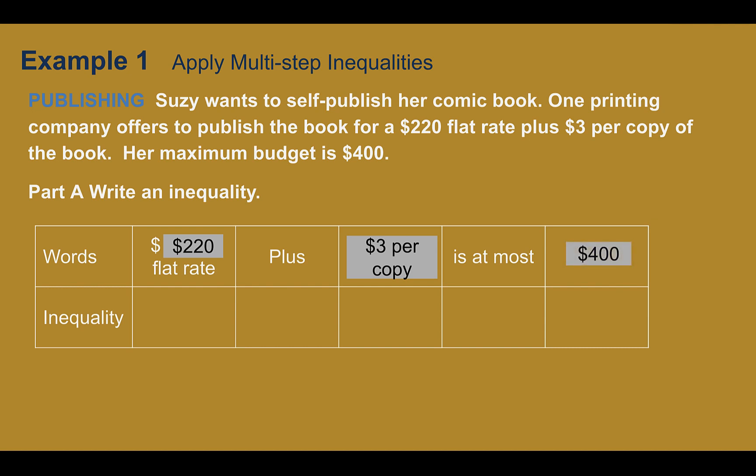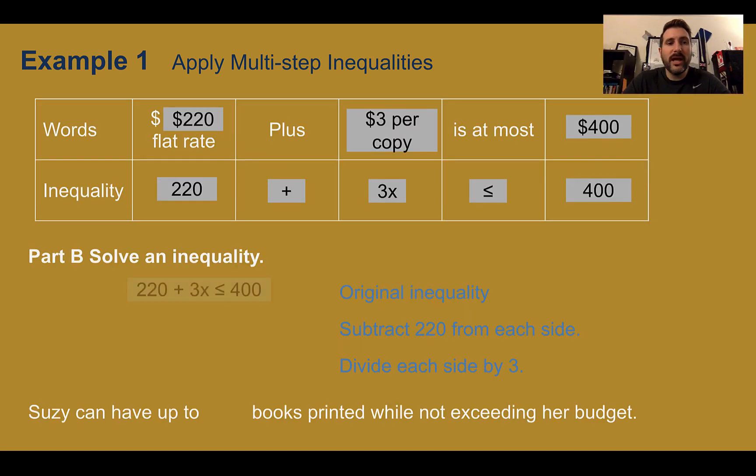Putting this as an inequality, we would say $220, they're only going to pay that once, there's no variable, plus $3 per copy, so 3 times x. How many of her copies? We would multiply it by 3. Is at most, so she cannot spend more than that. So it's the less than or equal to symbol. And then $400. Squishing that all together, we end up with 220 + 3x ≤ 400.